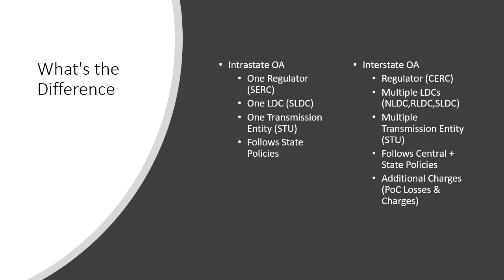Since the generating plant and consumer plant are in different states, you could be using the State Transmission Utility of the state where you produce, the State Transmission Utility of the state where you consume, and in between you also use the Central Transmission Utility (CTU), managed by Power Grid. These power transactions are driven mainly by central policies, though state policies also prevail on the consumer side in certain cases.